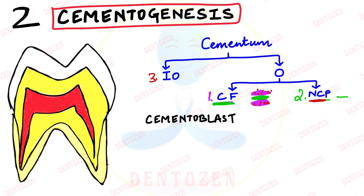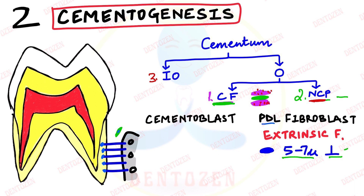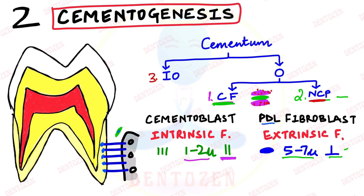The fibroblast cells of the PDL form PDL fibers, which get embedded inside the cementum — shown here in blue. These fibers coming from the fibroblasts of the periodontal ligament are called extrinsic fibers. They are large fibers, possibly in bundles, five to seven microns in size, and they are perpendicular to the root surface. The fibers coming from cementoblasts are called intrinsic fibers — they are smaller, one to two microns, and arranged parallel to the root surface.